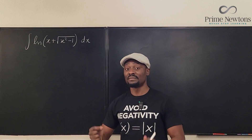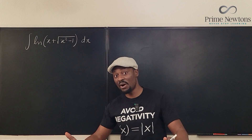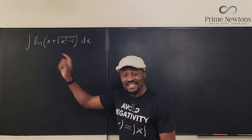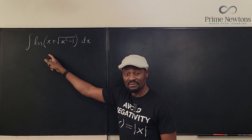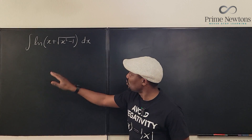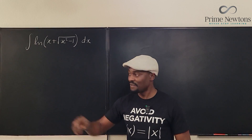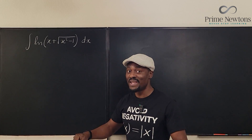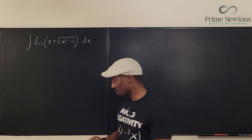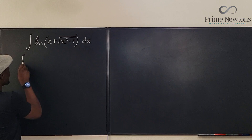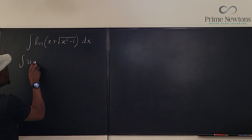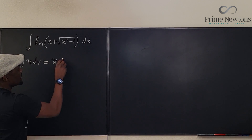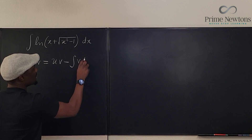So the most common option we have is integration by parts. And what that means is we have to choose — there are just two things under the integral sign: the natural log function and dx. So one of them will be u and the other one will be dv. So we know we're supposed to do this: what we have is u dv.